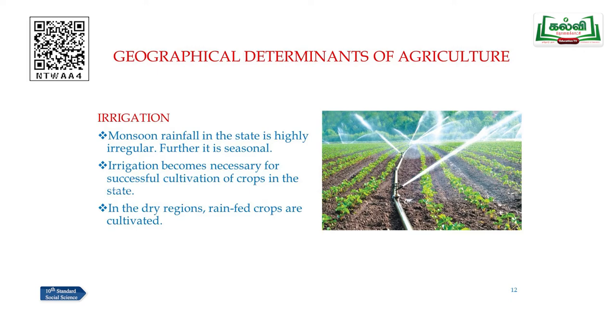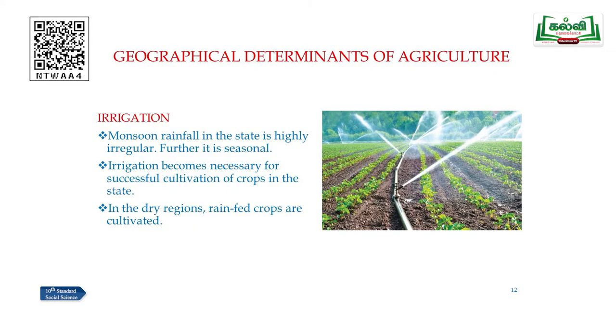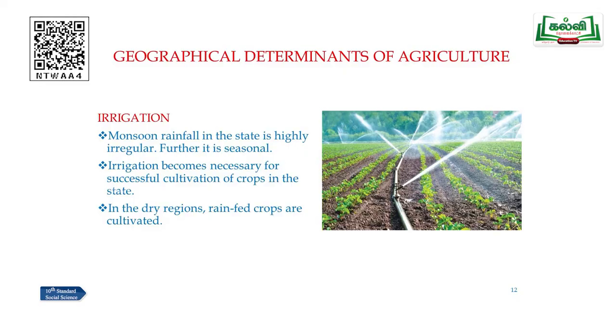Irrigation is another important geographical determinant of agriculture. Monsoon rainfall in our state is highly irregular and seasonal. Irrigation becomes necessary for successful cultivation of crops in Tamil Nadu. In dry regions, rain-fed crops are cultivated.